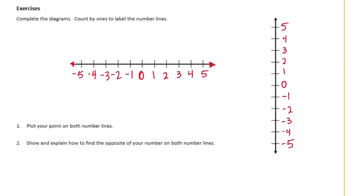So plot your point on both number lines. So I believe if you were doing this in class, your teacher might have passed out cards and you got a different number. Everyone got a different number. But I'm going to pretend I'm in class and I got negative 3. I'm going to pretend that my card said negative 3. So I'm going to plot negative 3 on both number lines. So there's my negative 3.